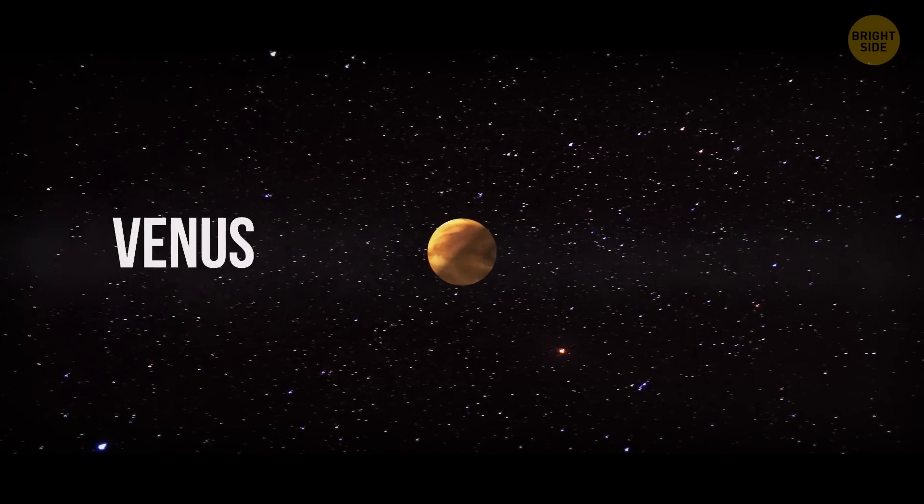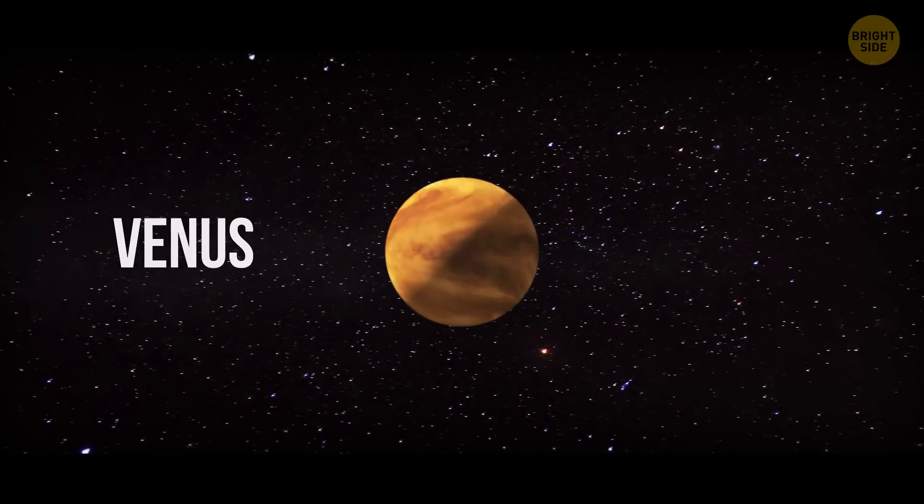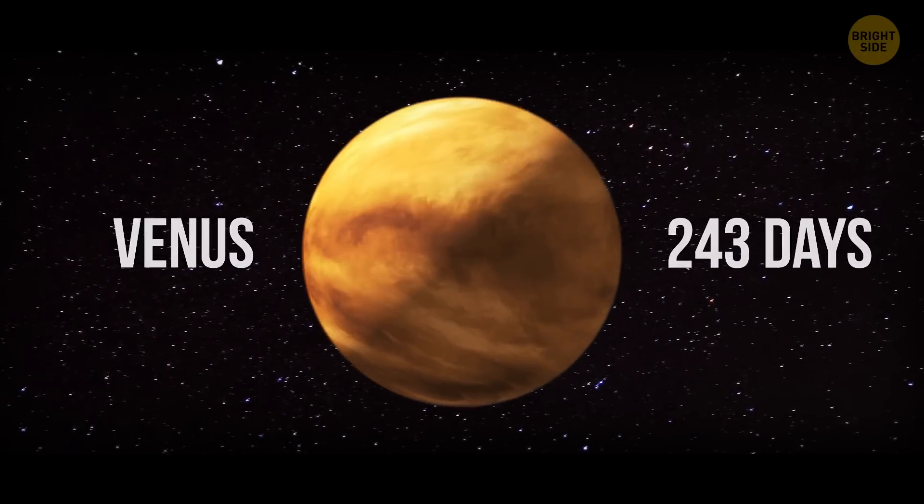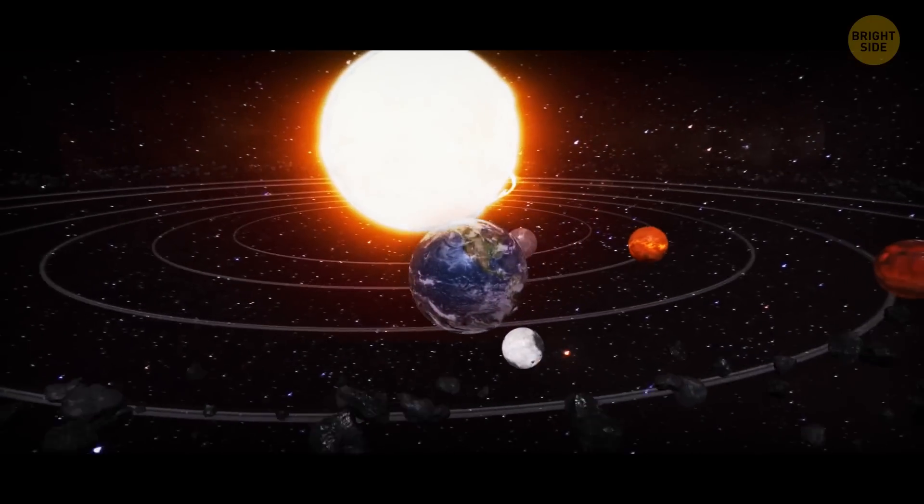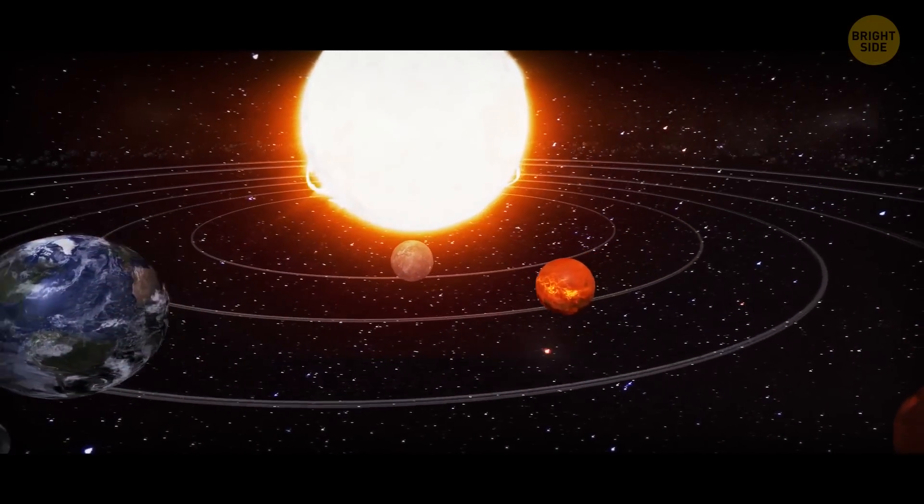A day on Venus is longer than a year. It takes the planet 243 Earth days to rotate around itself, and only 225 Earth days to make a full circle around the sun.